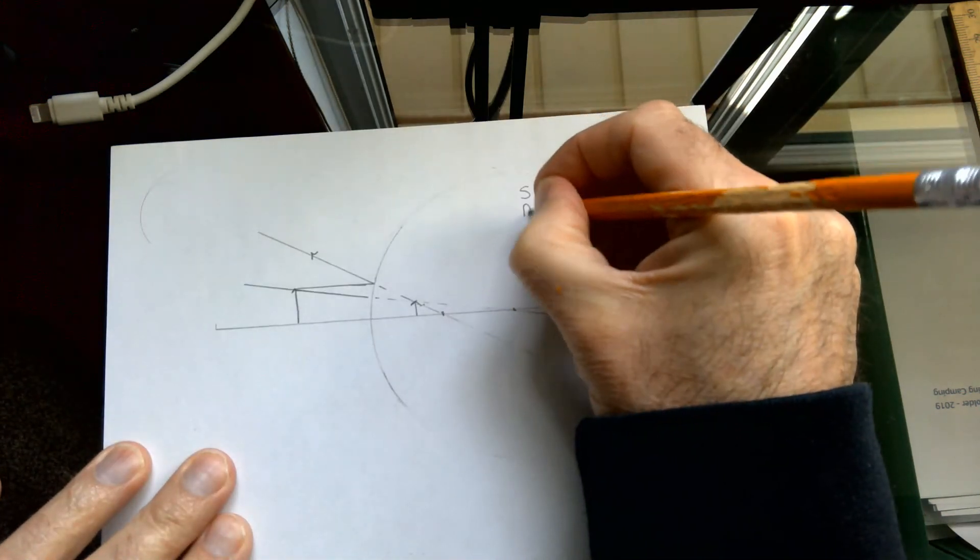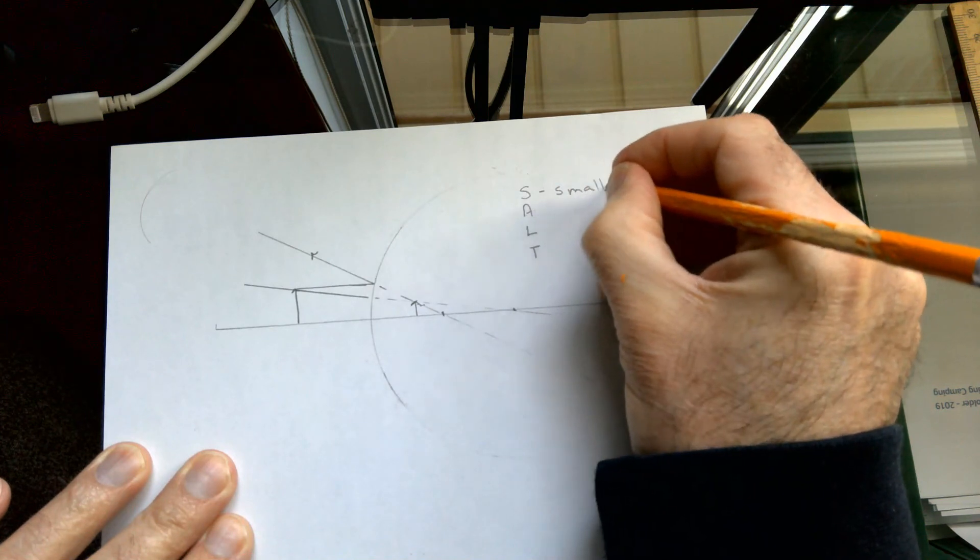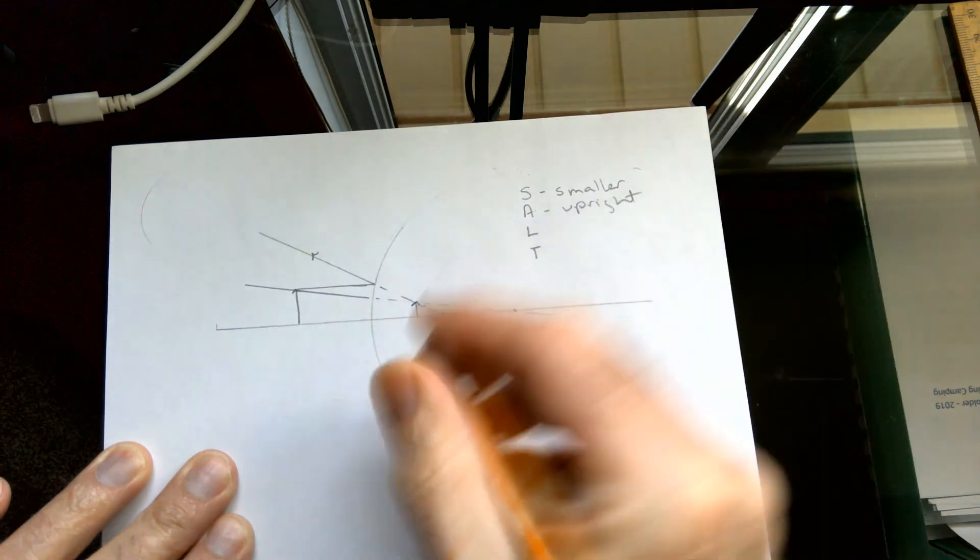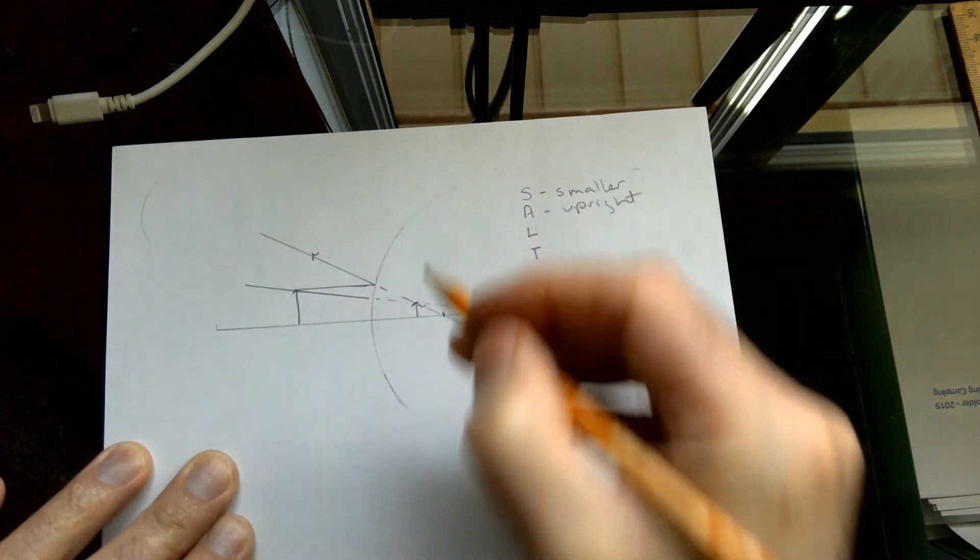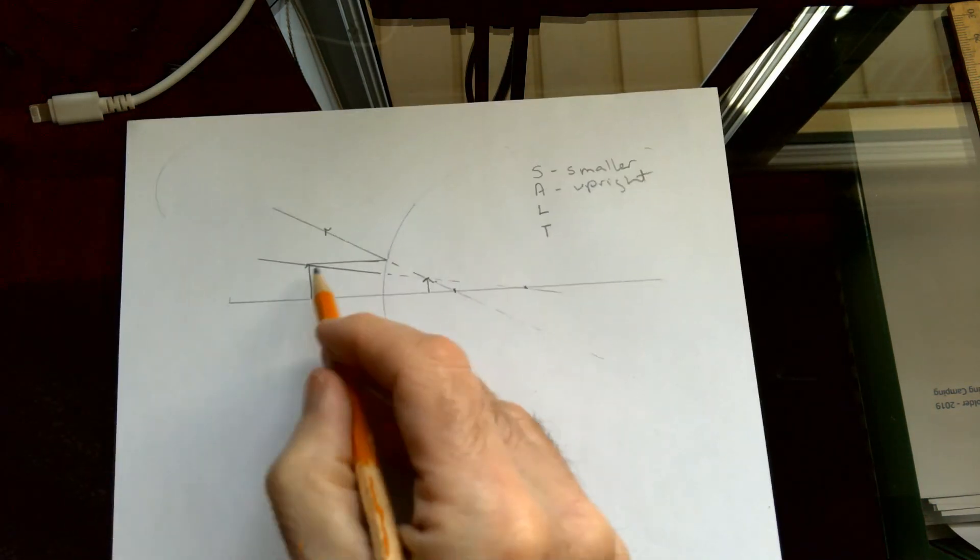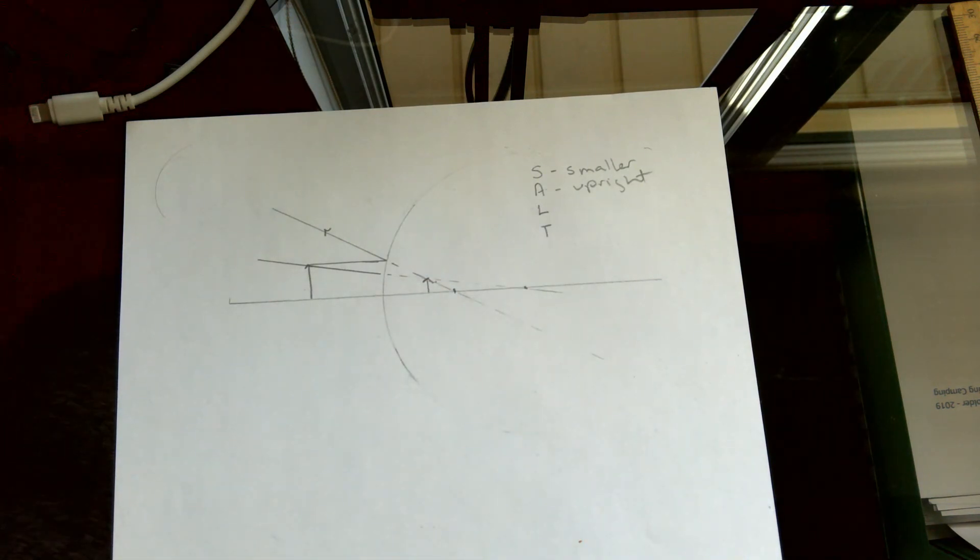SALT. The size is smaller. The attitude is upright. So the image is smaller than the object. It is upright, so the arrow's pointing up. Because the light is coming off the arrowhead, the top of the arrowhead, that's where you draw your image, where the light rays converge.